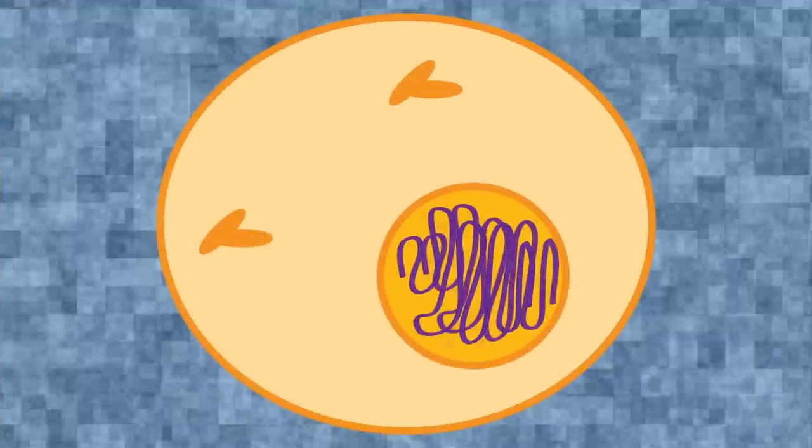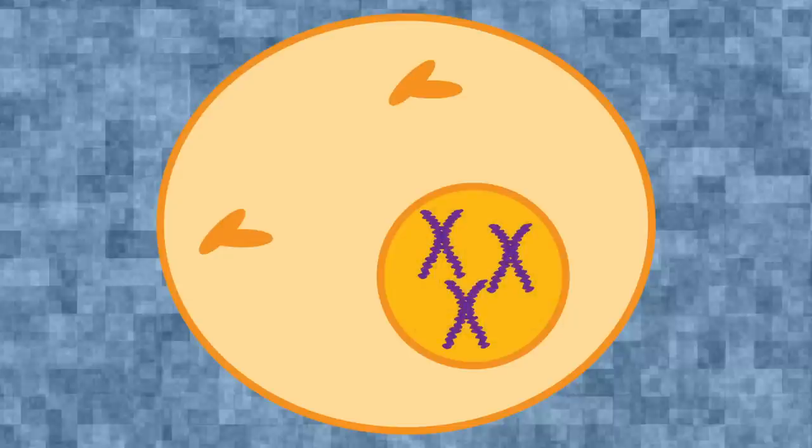We begin with a cell. This cell replicates its DNA so that it has two copies of everything, and then winds the DNA up into chromosomes. This way, it is all nicely packaged and can be easily separated later.